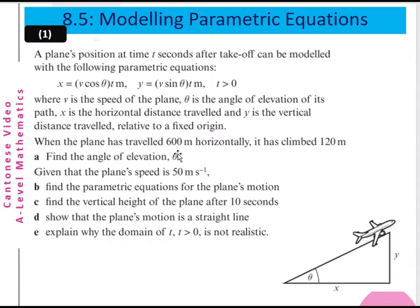When the pen has traveled 600 meters horizontally and has climbed 120 meters vertically: Part a — Find the angle of elevation θ. Part b — Given that the pen's speed is 50 meters per second, find the parametric equation for the pen's motion.